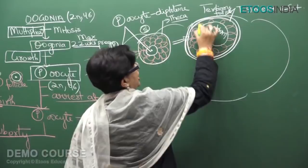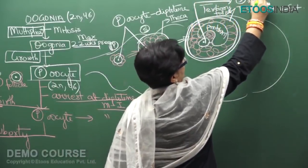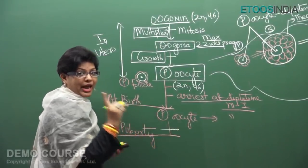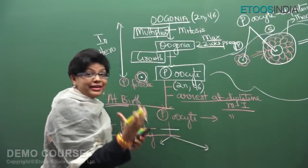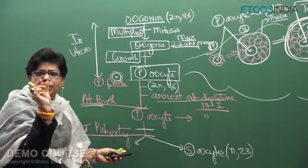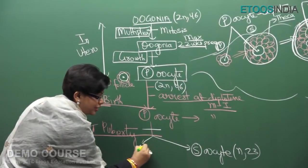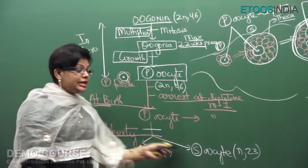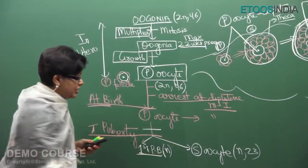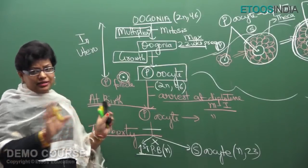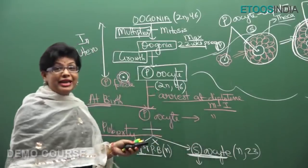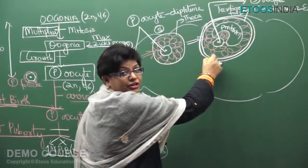After puberty, the primary oocyte completes meiosis 1. At the end of meiosis 1, two cells are formed by unequal cytokinesis: one cell receives more cytoplasm and becomes the secondary oocyte — which is haploid — and one small cell with less cytoplasm becomes the first polar body, also haploid. This is unlike spermatogenesis where both secondary spermatocytes are of equal size. The secondary oocyte is formed in the tertiary follicle stage by completion of meiosis 1.